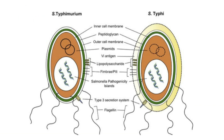The structure of S. typhi consists of an outer cell membrane, cell wall, and inner cell membrane. The plasmids are extra-chromosomal DNA that replicate independently of the chromosomal DNA. These plasmids are responsible for the resistance acquired through foreign genes and are a cause of antibiotic resistance in S. typhi.